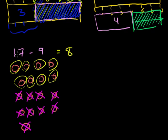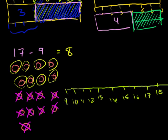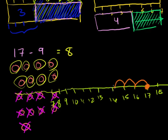But that took a long time. If this number were much bigger, it would take forever to draw all those circles and scratch things out. So another way — maybe easier to visualize — is to draw the number line. You don't always have to start at 0. So: 18, 17, 16, 15, 14, 13, 12, 11, 10, 9, 8, 7. I start at 17 and take away 9: 1, 2, 3, 4, 5, 6, 7, 8, 9. And we land at 8.